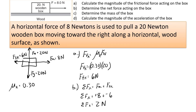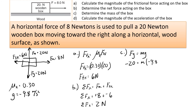Next, determine the mass of the box. We know the weight and we're on Earth, so we use FG equals MG. The weight is 20 Newtons, and g is 9.8 meters per second squared. Don't forget to write your units down to get full credit. Solving gives a mass of approximately 2.0 kilograms.